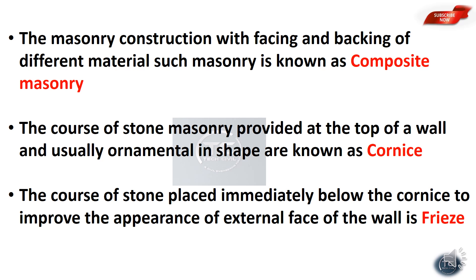The courses of stone masonry provided at the top of a wall, usually ornamental in shape, are known as cornice. The cornice serves a decorative purpose. The course of stones placed immediately below the cornice to improve the appearance of the external face of the wall is called the frieze.